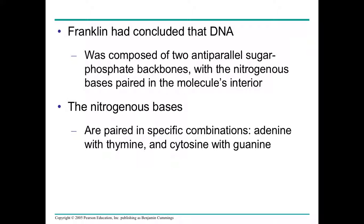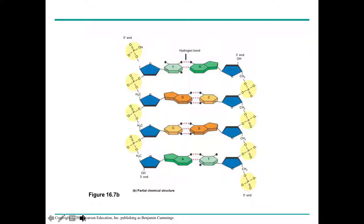The four nitrogenous bases in DNA are adenine, thymine, cytosine, and guanine — A, T, C, and G. At the molecular level, DNA looks like a ladder: the rungs are the nitrogenous bases in the middle, and the sides of the ladder are made of sugars and phosphates — the sugar-phosphate backbone — running anti-parallel to each other. One backbone goes one way, the other goes the opposite. One end is called the five prime end and the other the three prime end, and they are opposite each other on each strand.